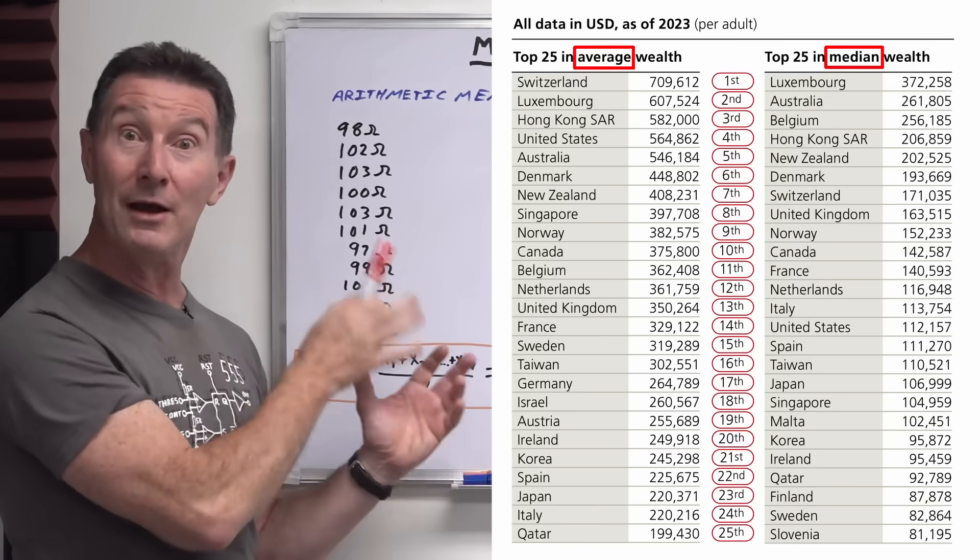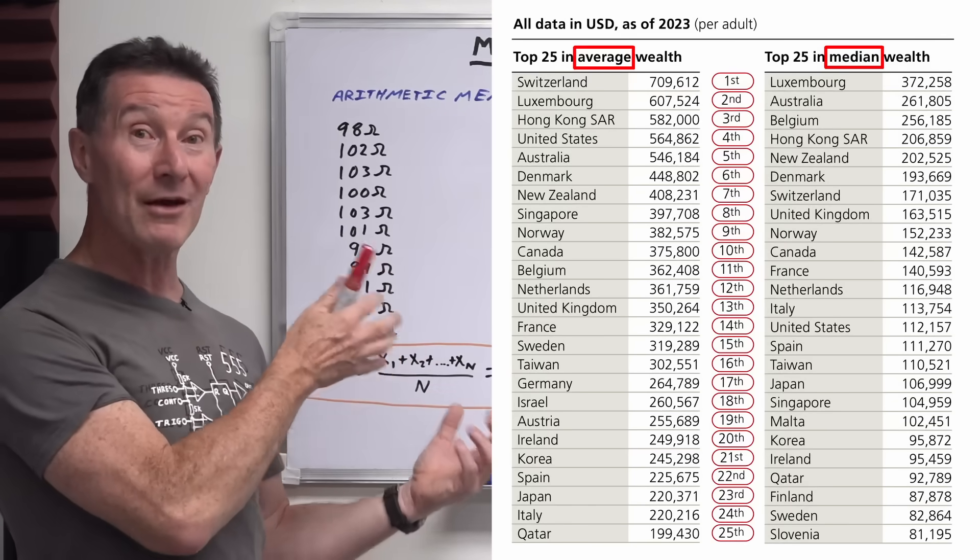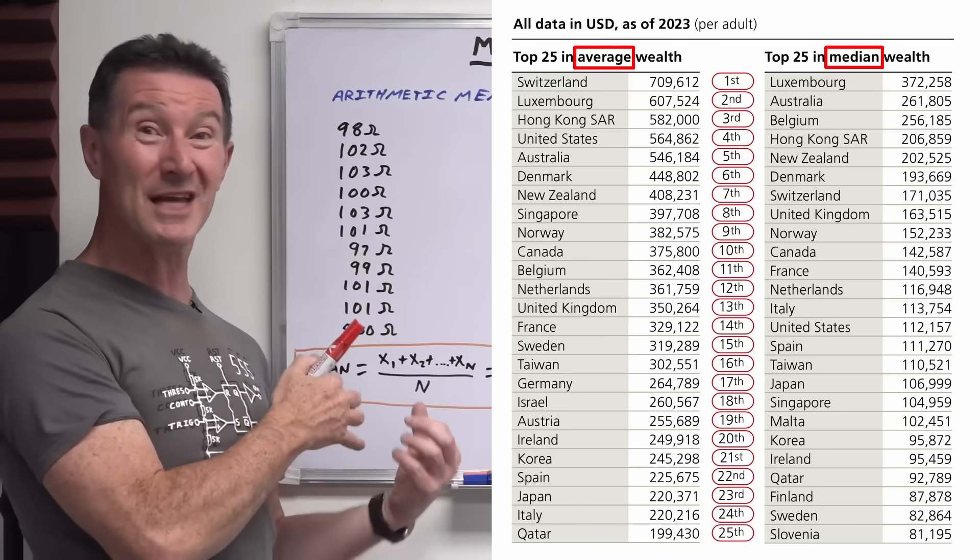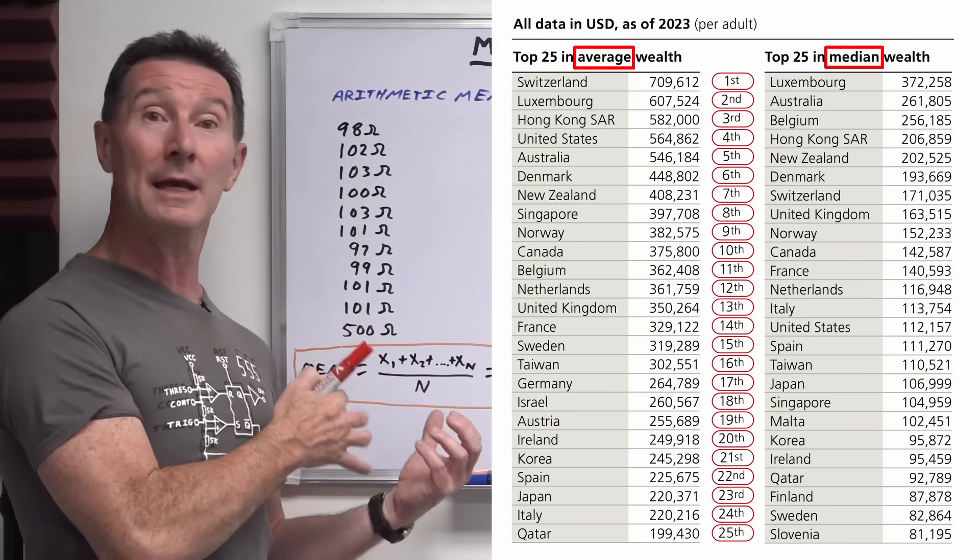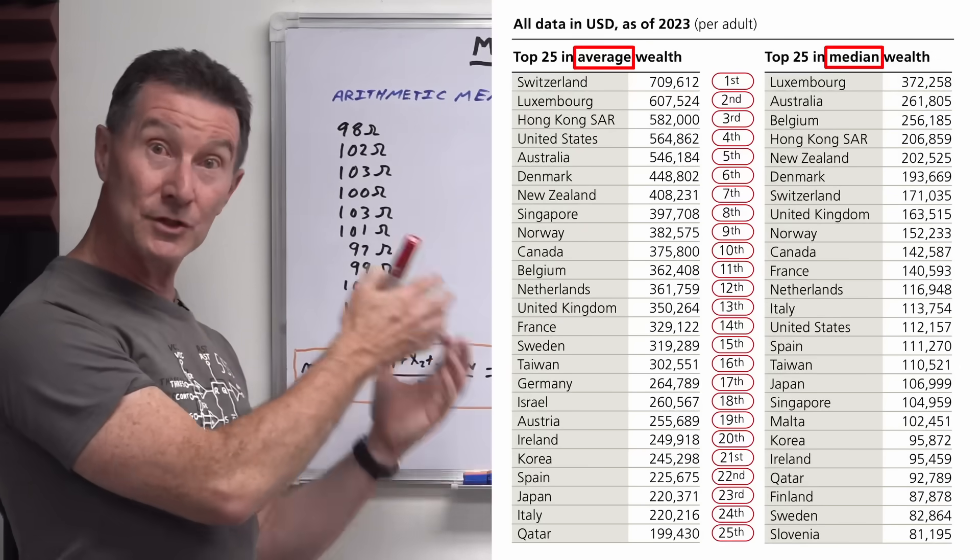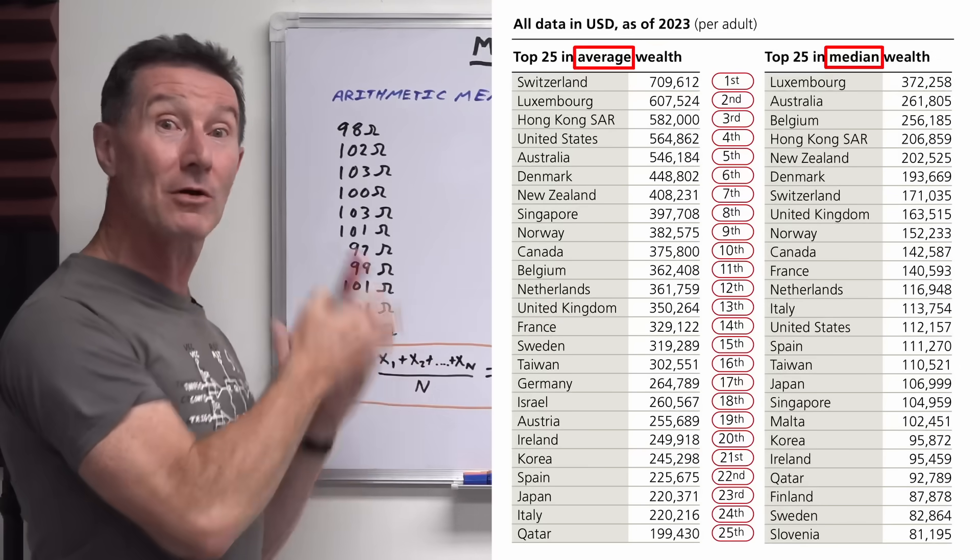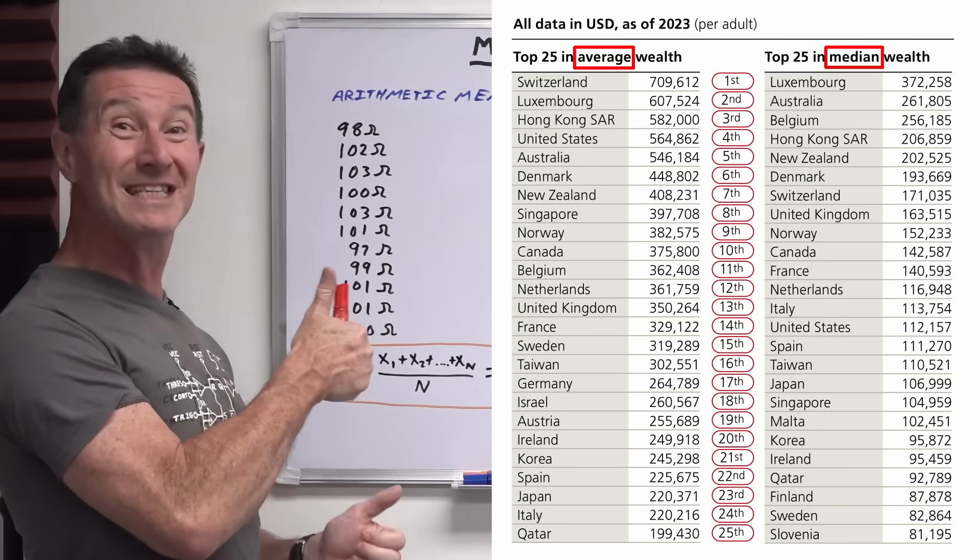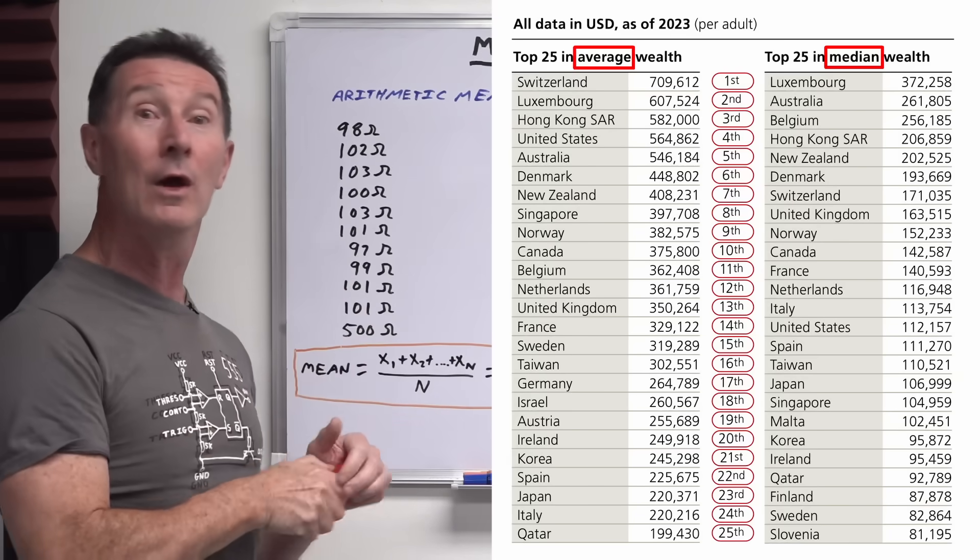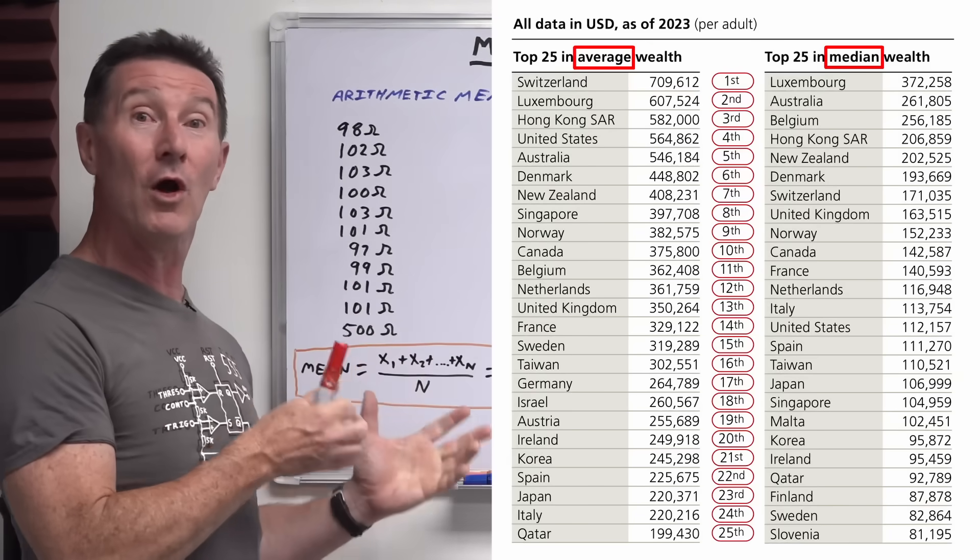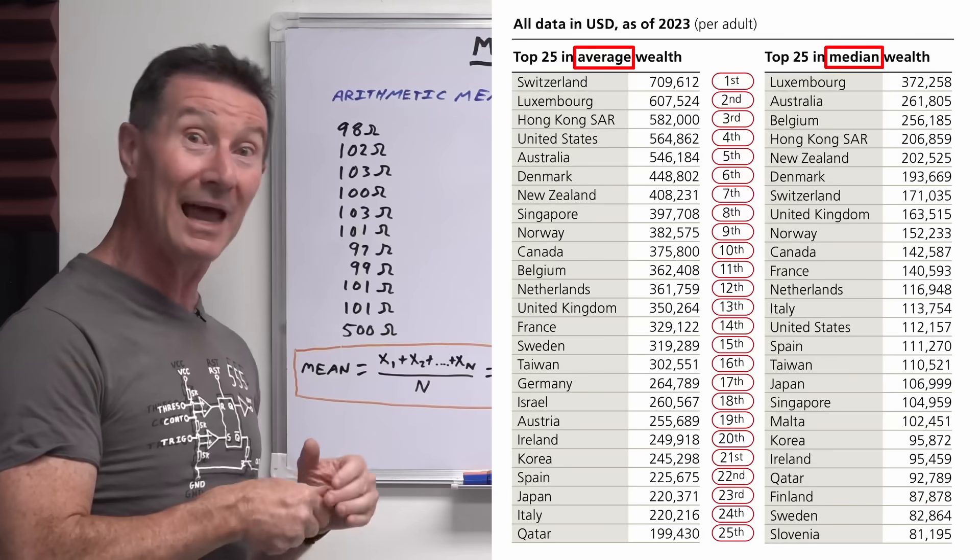So if you're the government or you're the manipulative legacy media, you could take either one of those values depending on how you want to spin it. You say, oh, US is now 14th in the world in wealth because you use the median value. Or you might want to spin it positive, oh, US is so fantastic, look at us go, we're number four, fourth in the world with median wealth, what are you complaining about?